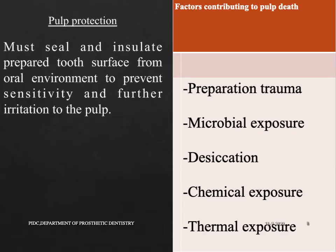Regarding pulp protection, the provisional restoration must seal and insulate the prepared tooth surface from the oral environment to prevent sensitivity and further irritation to the pulp. Factors contributing to pulp death include preparation trauma, microbial exposure, desiccation of the tooth structure, chemical exposure, and thermal exposure.